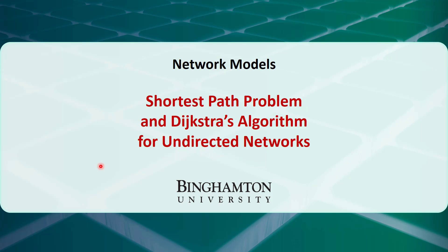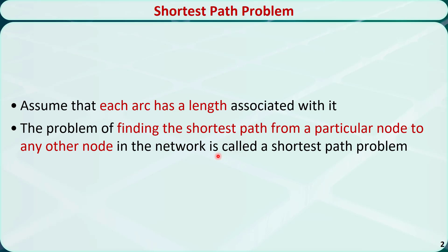In this video, I will talk about how to solve the shortest path problem using Dijkstra's algorithm for undirected networks. We assume that each arc in the network has a length associated with it. Suppose we start at a particular node. The problem of finding the shortest path, or the path with the minimum length from this node to any other node in the network, is called a shortest path problem.